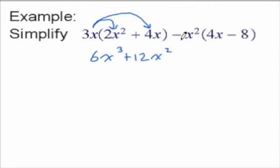And then over here, make sure you attach the sign to the x squared as you distribute it. So it's a negative x squared times a positive 4x. It's going to give you a negative 4x cubed. And a negative x squared times a negative 8 is going to give you a positive 8x squared.